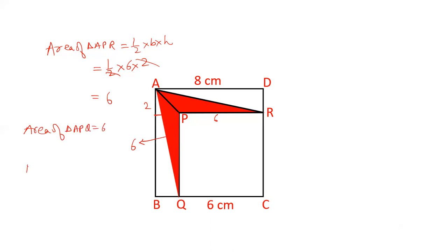So the area of the red region is 6 plus 6. That is 12 centimeters squared.